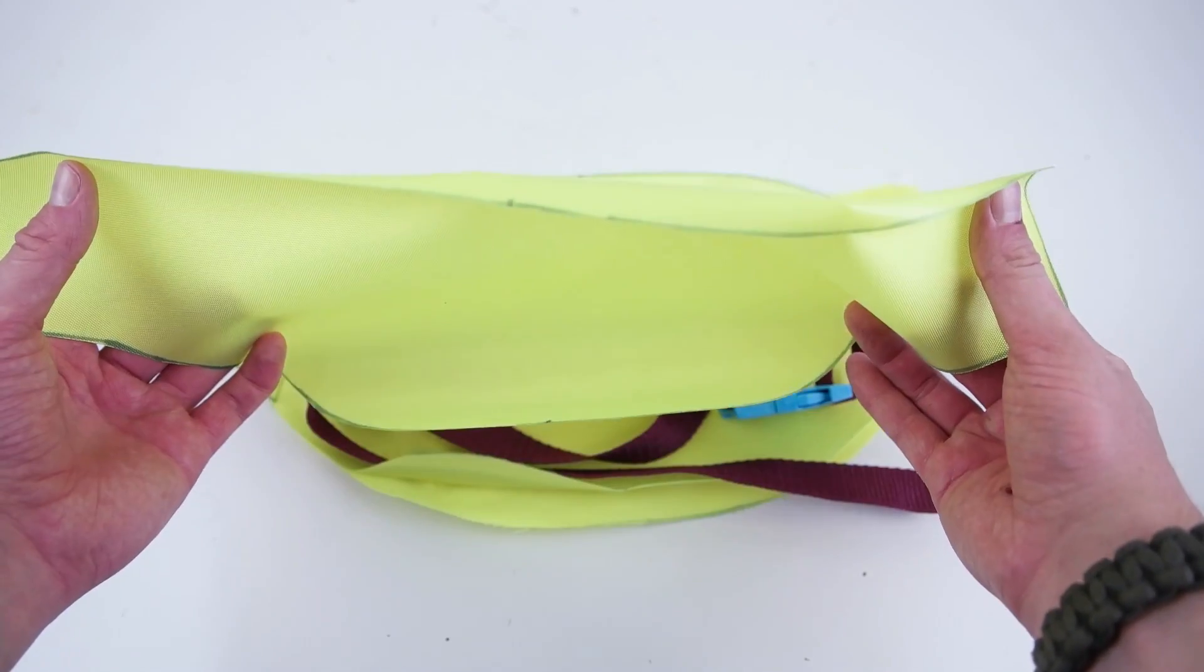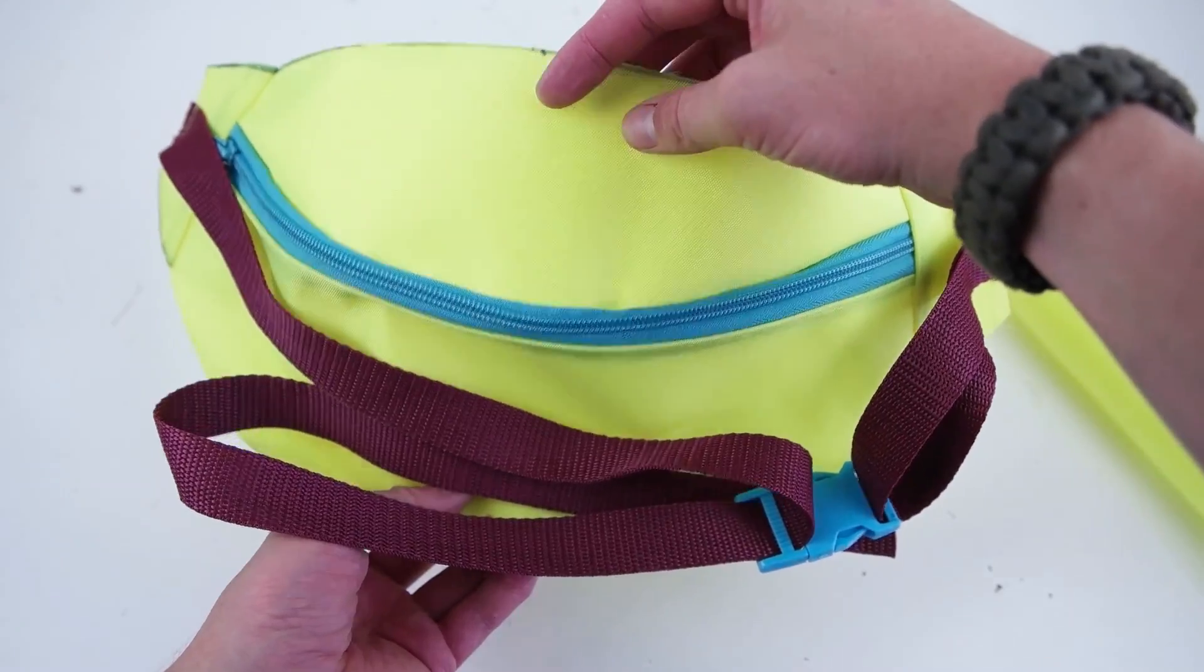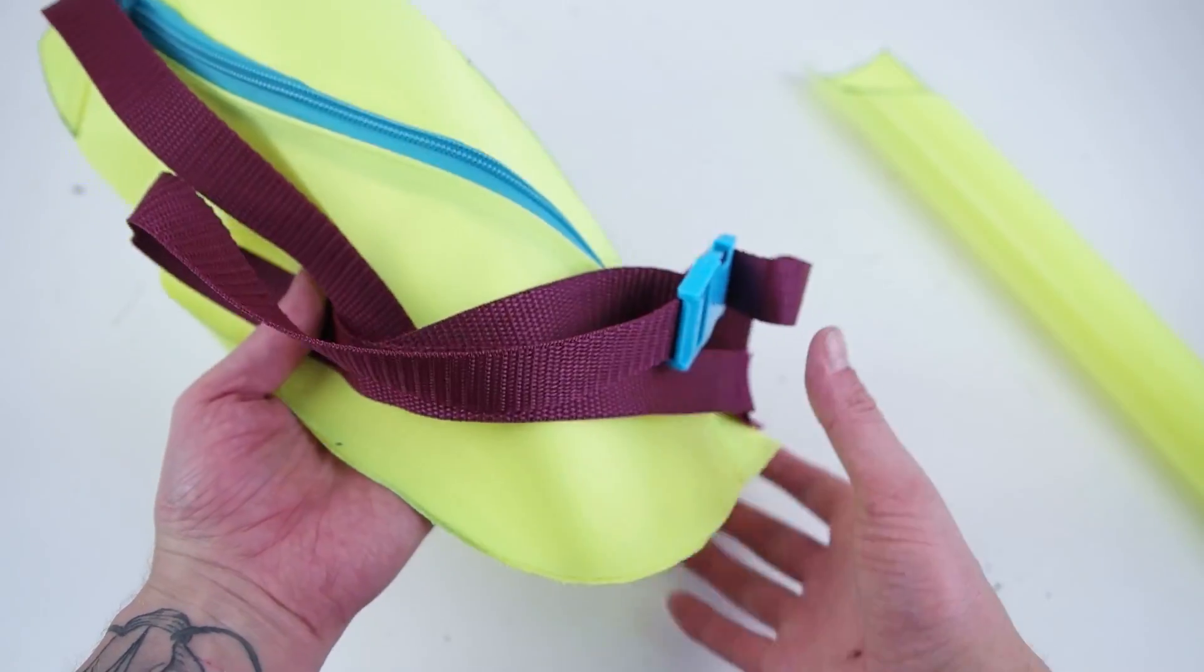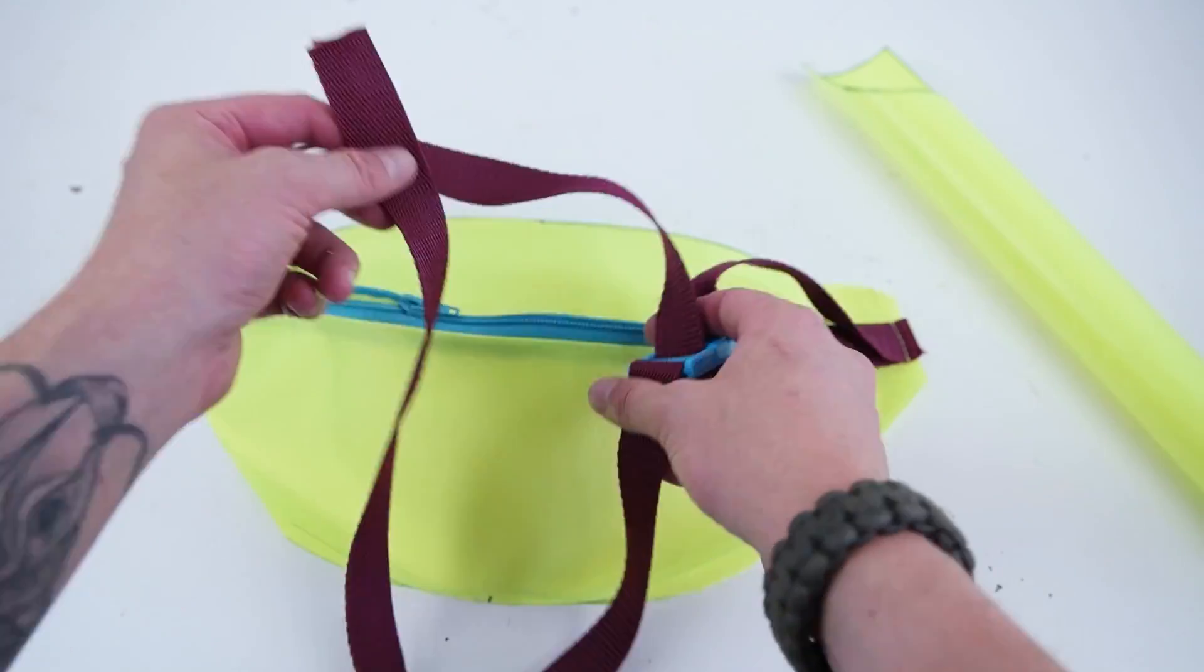Grab your back panel and mark the centers on both top and bottom. Do the same thing for the front panels. Make sure you unzip it a little bit so that you can pull it right side out easier when you're done sewing.